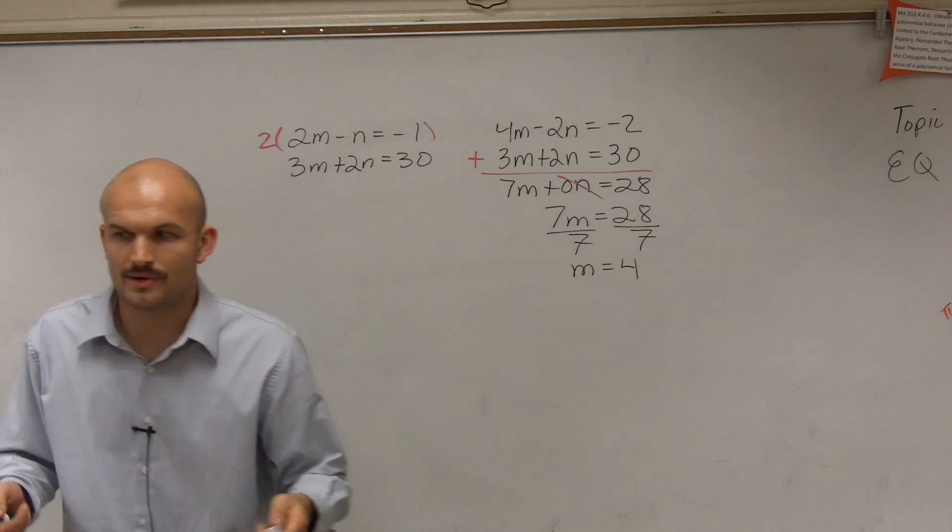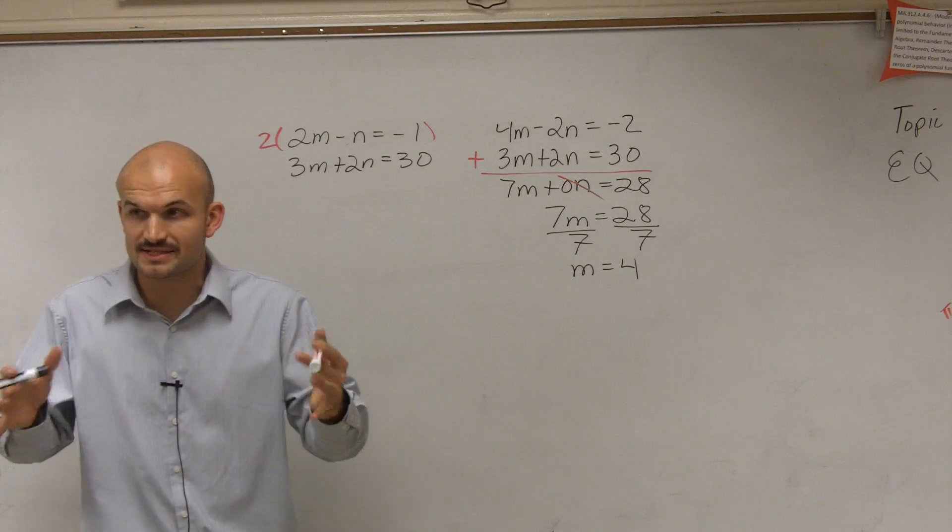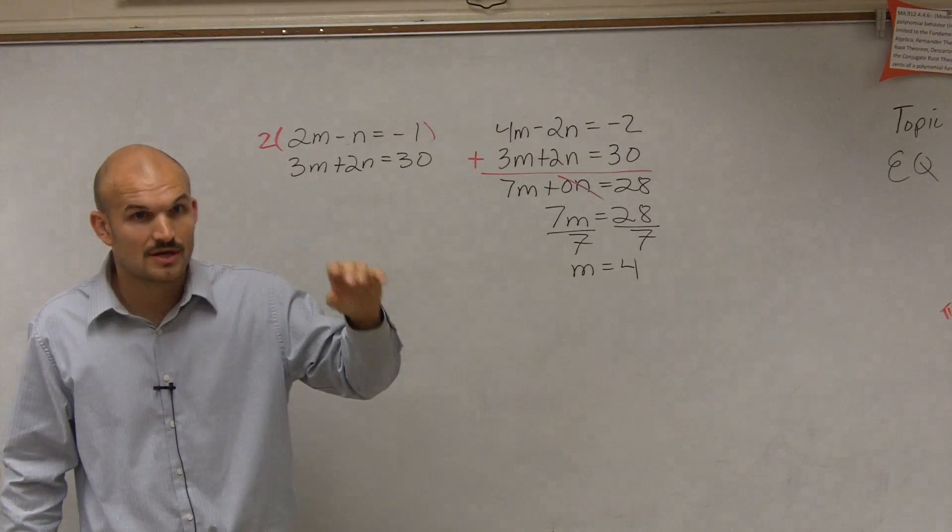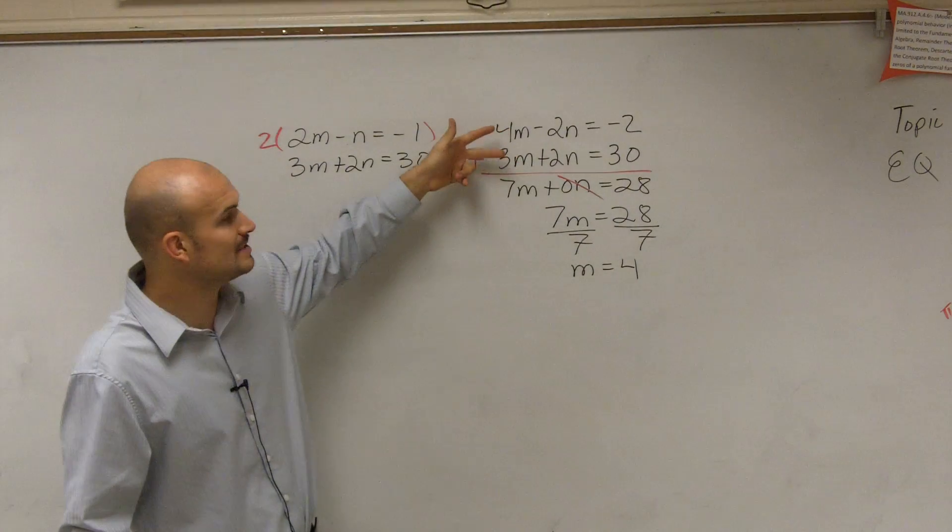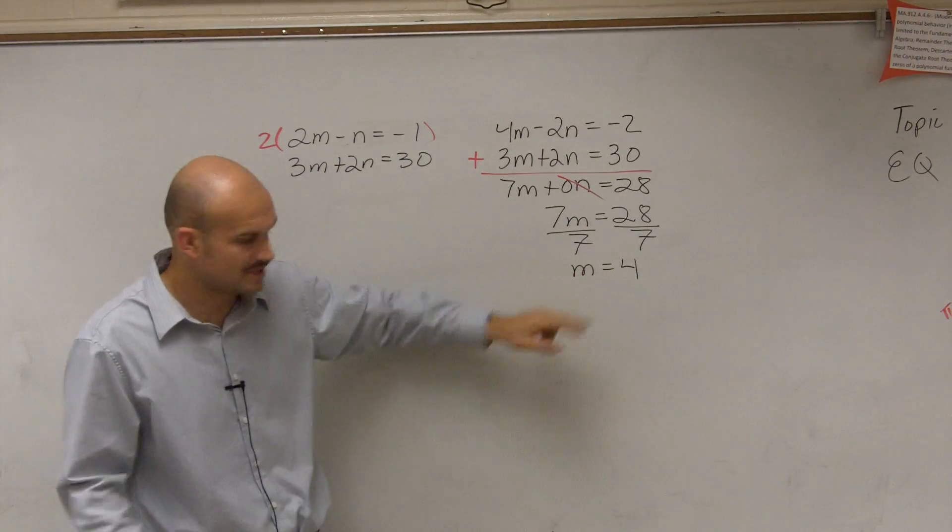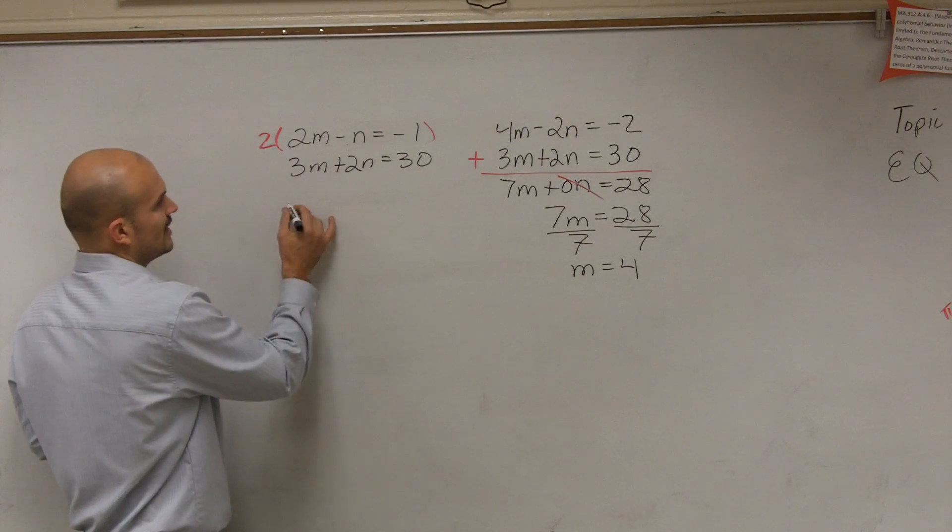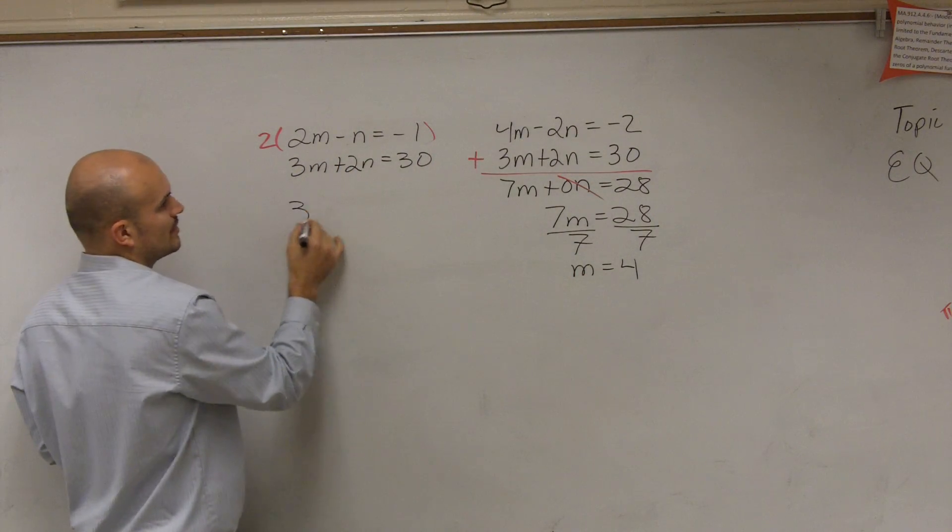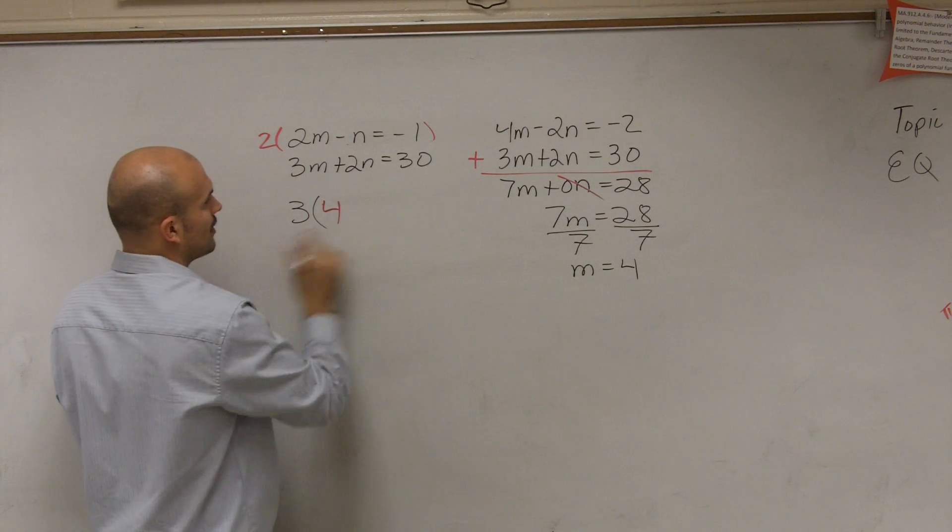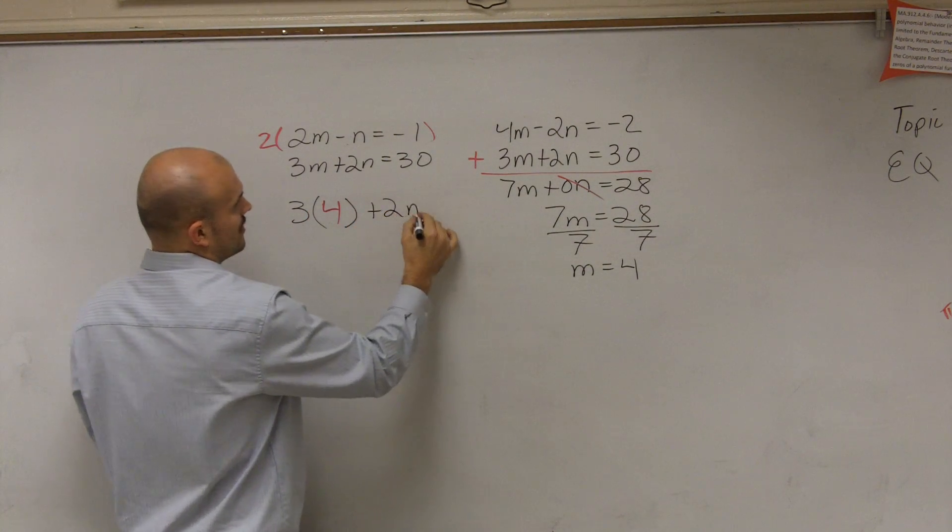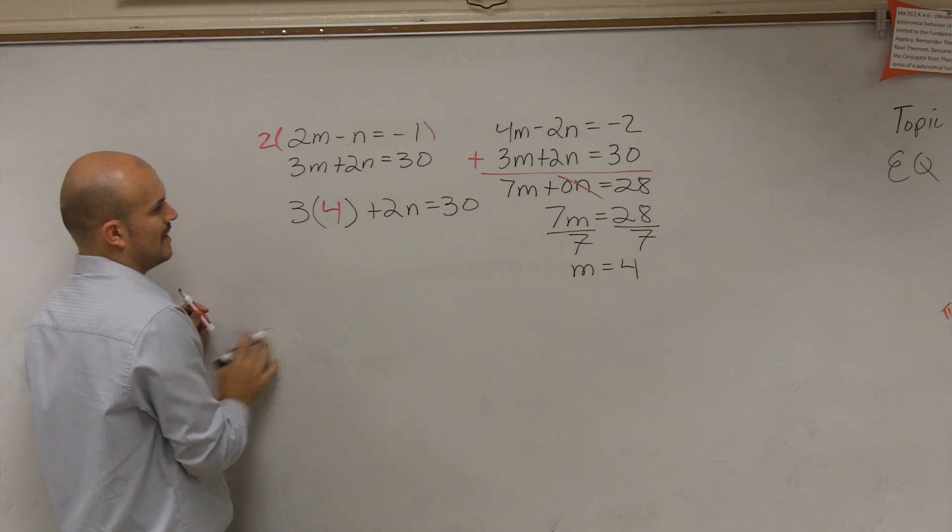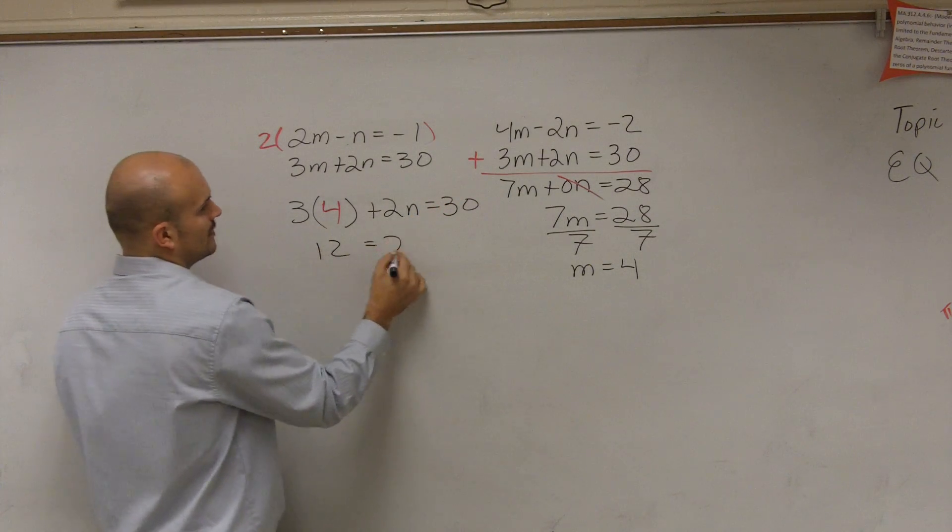Because, if you guys remember, when solving systems, it takes two equations to solve for two variables. So if I have two equations, if I get this down to one variable, I can solve it with one equation, which I did. Then I just plug it in, and it doesn't matter which equation. You could even plug in this one. So I do 3 times my new m, which is 4, plus 2n equals 30. Now we need to do a little bit of math from algebra 1. So 12 plus 2n equals 30.